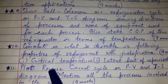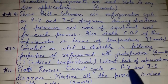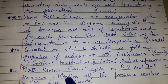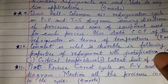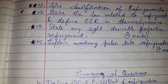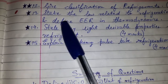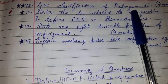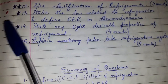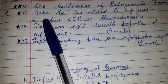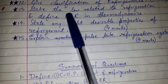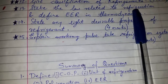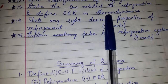Question eleven: Plot the reverse Carnot cycle on P-V and T-S diagrams and mention all the processes involved in the cycle, for four marks. Question twelve: Give the classification of refrigerants, for four marks — this was asked twice recently, making it more important. Also: state the law related to refrigeration and define EER in thermodynamics.